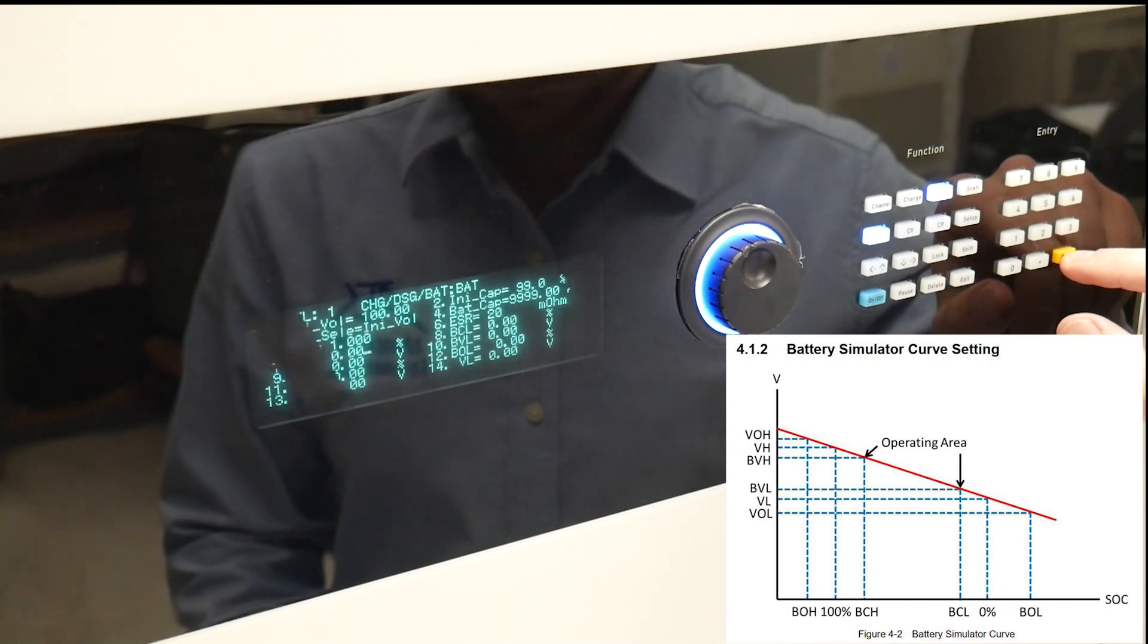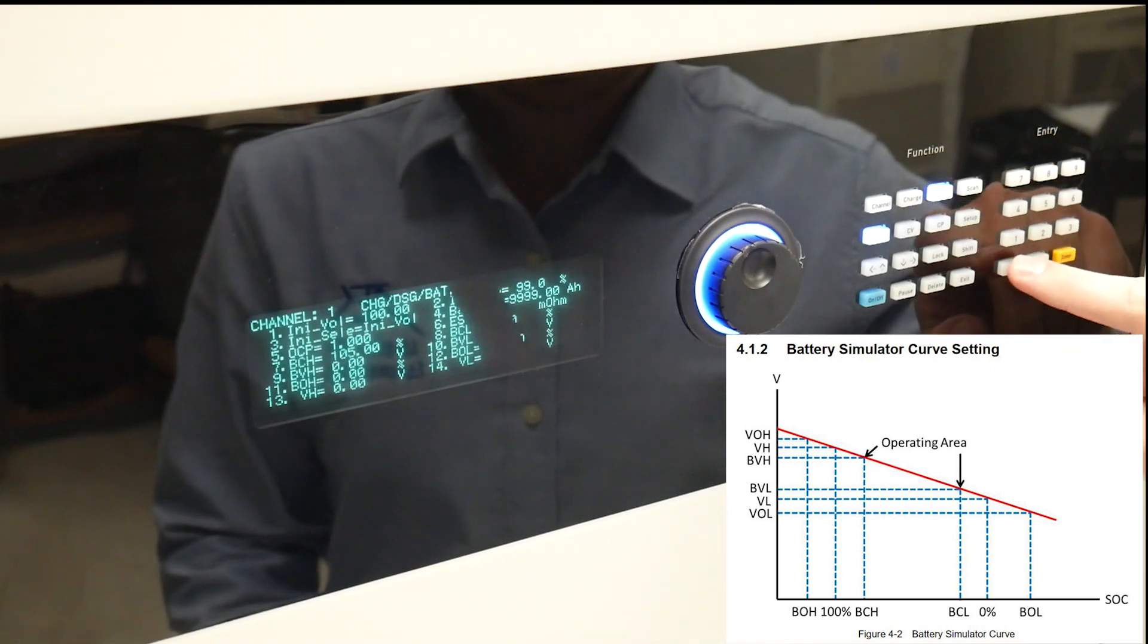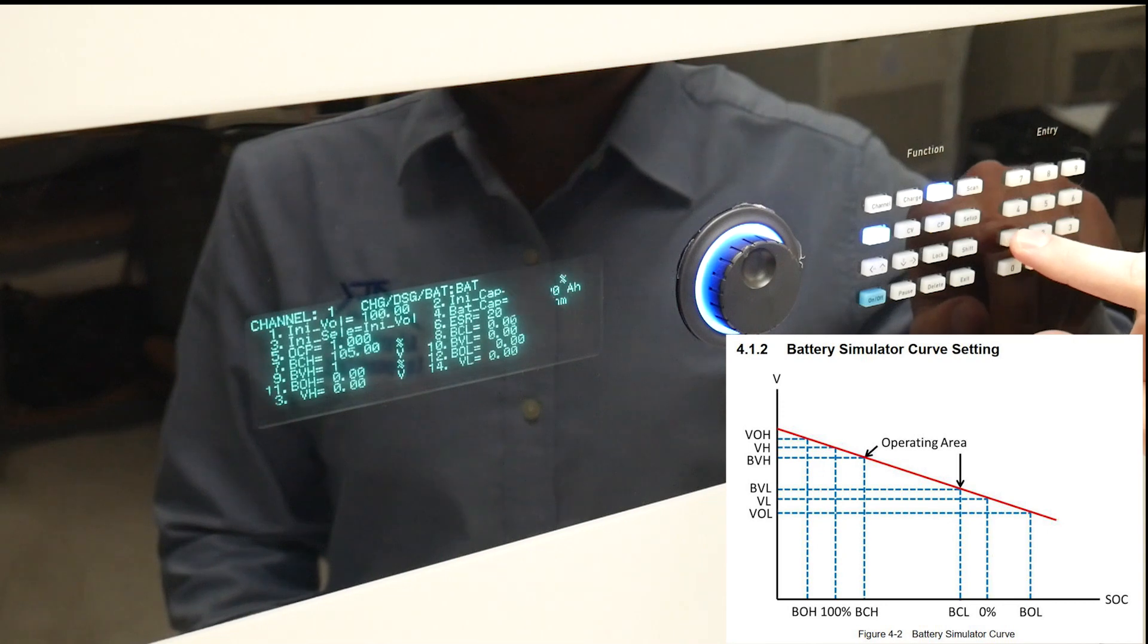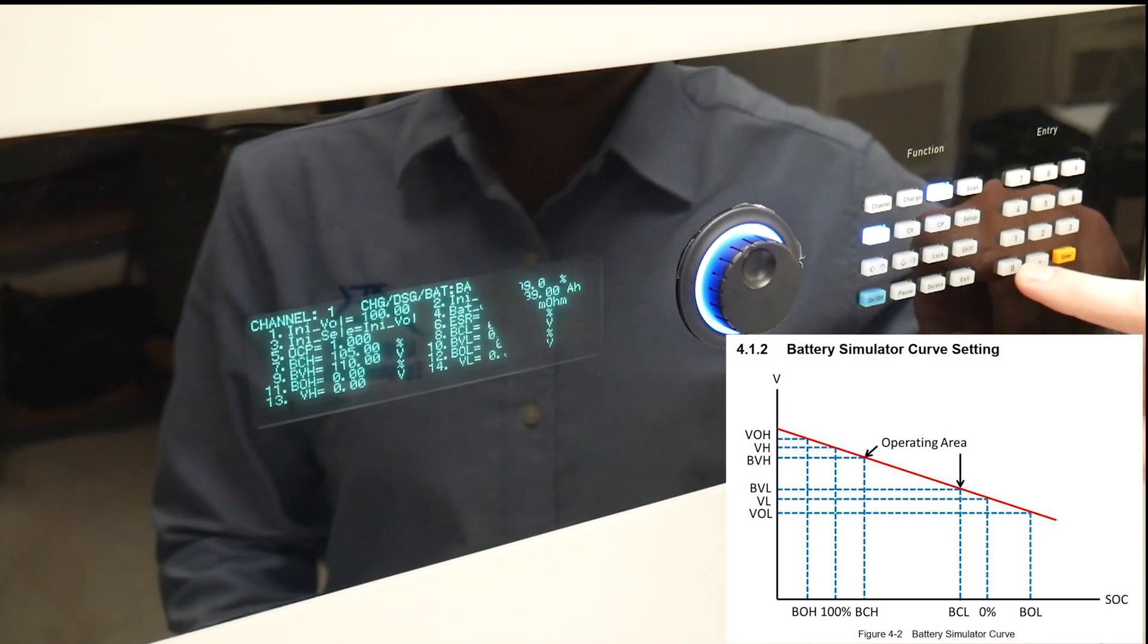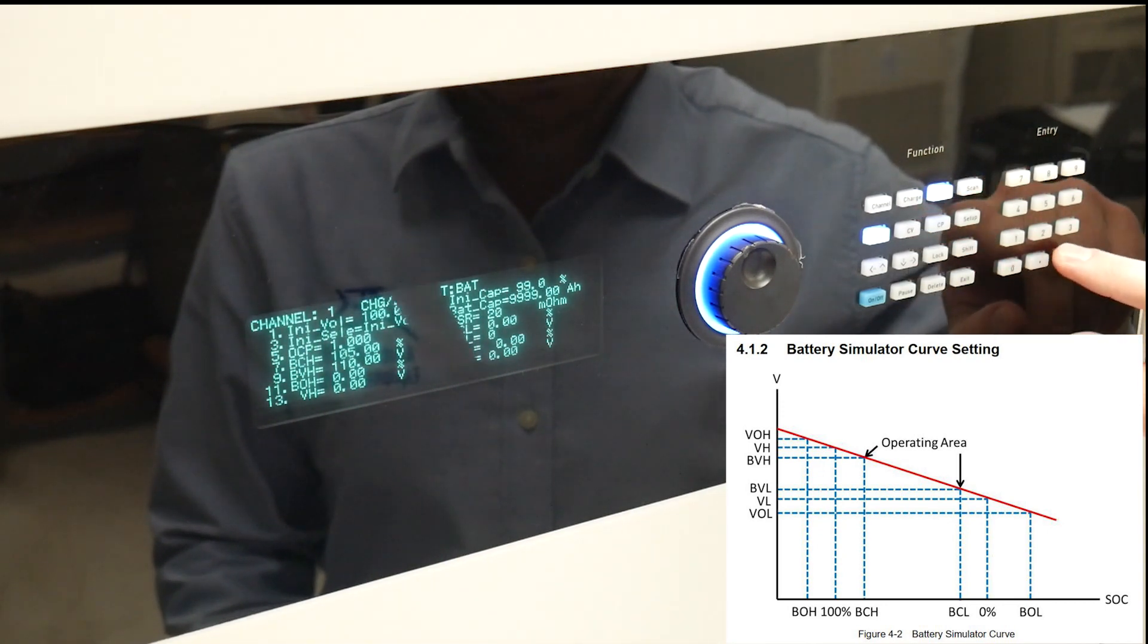Essentially this battery operates from 110 volts to 0 volts defined by BVH and BVL with a capacity defined by percentage from BCH to BCL.